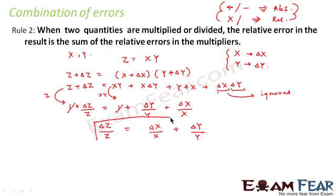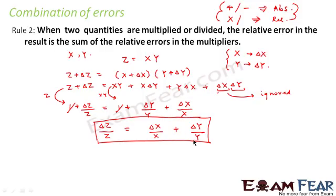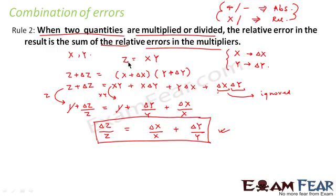So what did we prove? We proved that in case of multiplication, the relative error in the result — which is delta z by z — is equal to the sum of the relative errors of the two quantities. Relative error is the ratio of the absolute error to the actual quantity. This is what rule 2 states: when two quantities are multiplied or divided, the relative error in the result is the sum of the relative errors in the multipliers. You can try the same derivation for division, where z equals x divided by y, and proceed in a similar way.